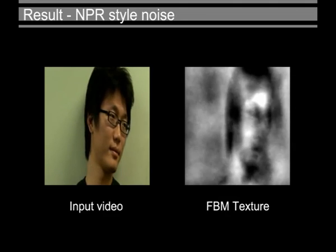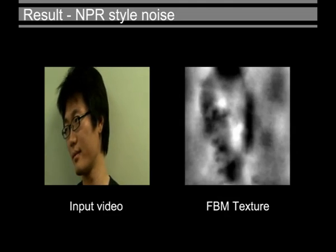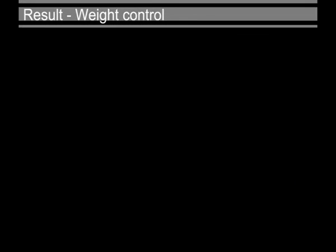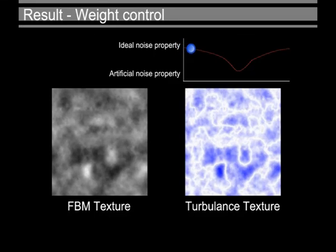Using the amplitude control in the FBM, we could generate the NPR-style noise pattern. We can control the degree of stability of the noise function by controlling the weights in the objective function in optimization.